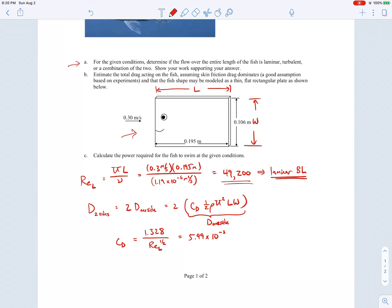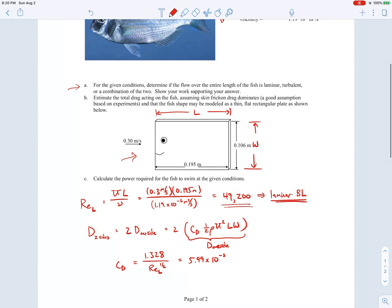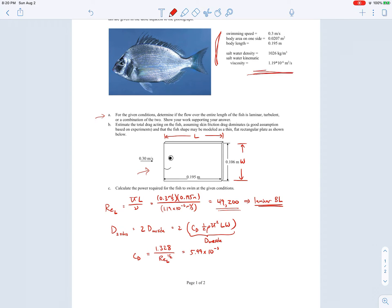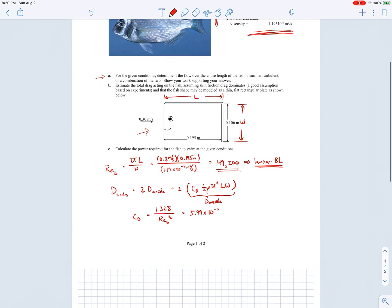We can use that drag coefficient with the information we were given up here near the top of the page to calculate what the drag force will be. If we do that, we'll get the drag on one side is 5.72 times 10 to the minus 3 newtons, and the drag on two sides will be that times two, 1.14 times 10 to the minus 2 newtons.